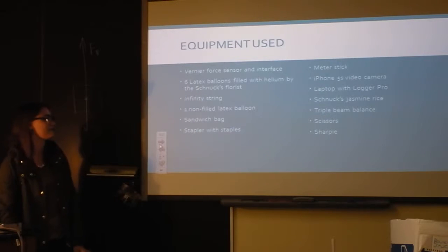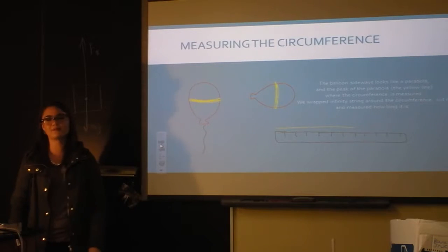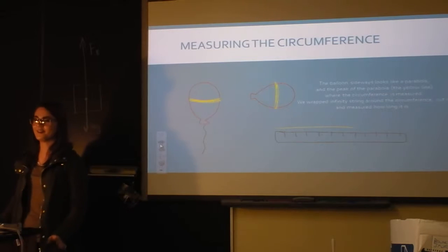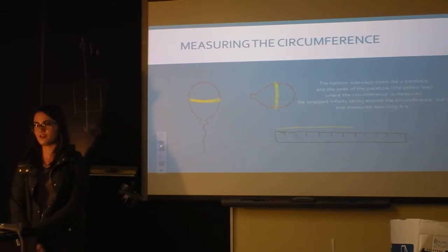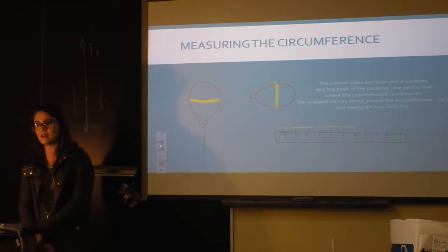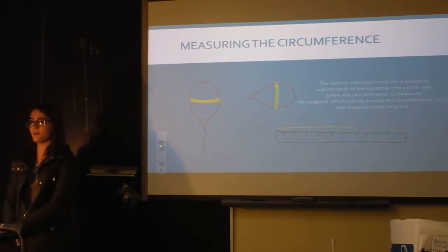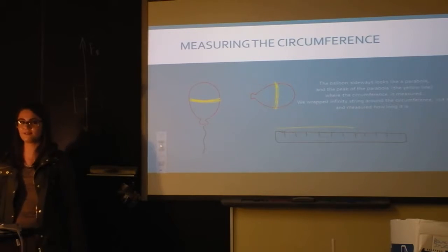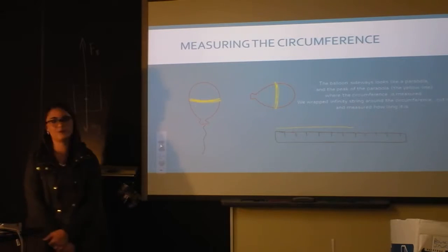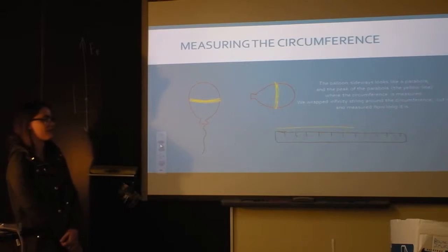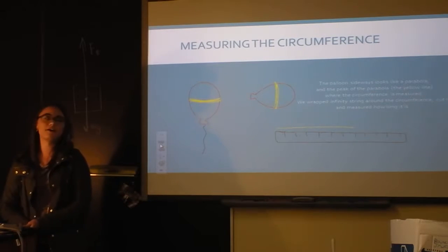This is the equipment I used, and I'll talk about that when I show my setup. One of the biggest parts of the lab was figuring out the volume of the balloon, because the equation for the buoyant force is the density of air times the volume times gravity. Since I went to Schnucks and had the ladies fill them up, I didn't really know how much helium they put in. I had to estimate, so I assumed the balloon was a perfect sphere — which it wasn't — measured the circumference, found the radius, and then used four-thirds pi r cubed to find the volume.